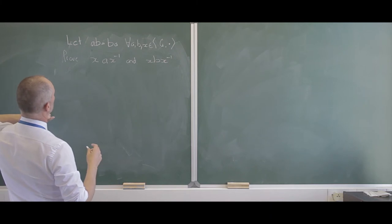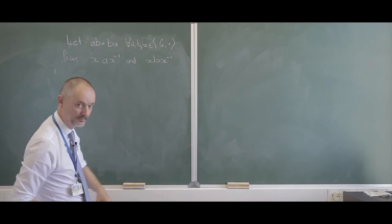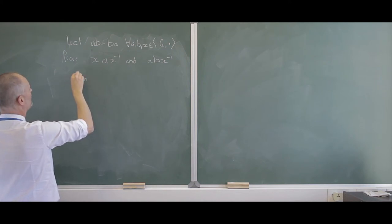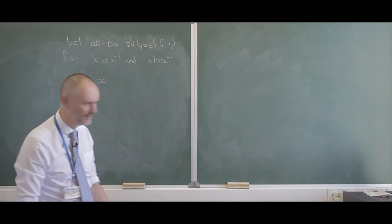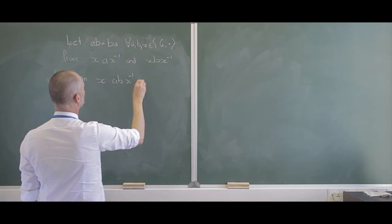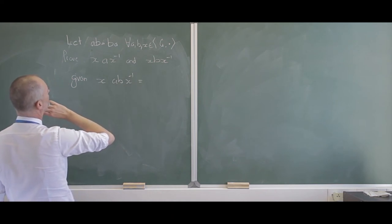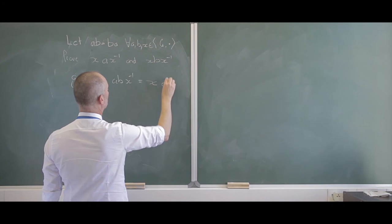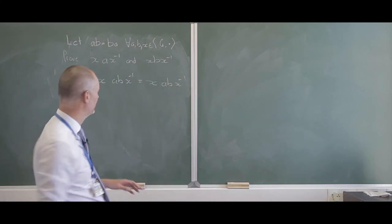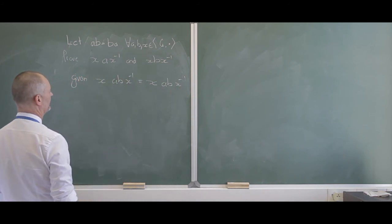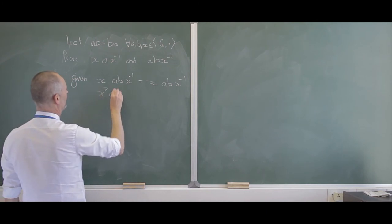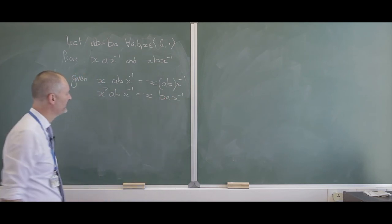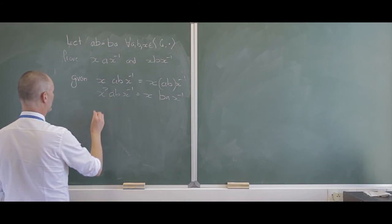Now we've added a special element X, where A, B, and X are elements of this special group with commutativity. We need to show that XAX inverse and XBX inverse commute. You have to think about this one a bit and be slightly creative. Let's consider XAX inverse times XBX inverse and do exactly the same on the other side. There's no special property yet — just what's there.